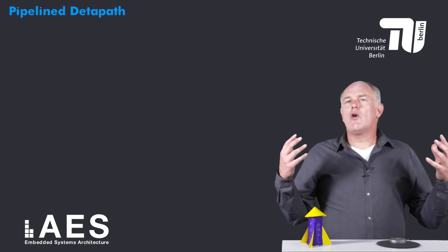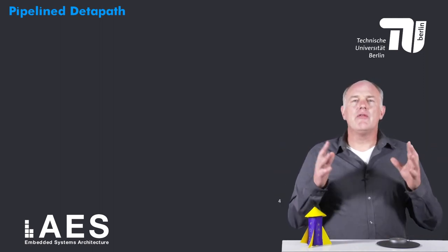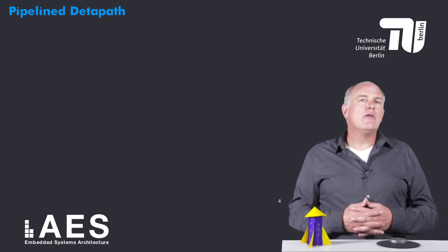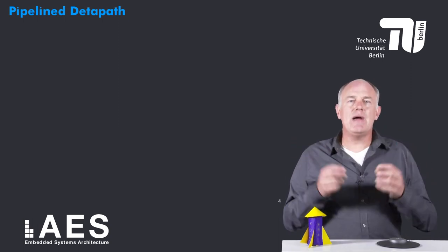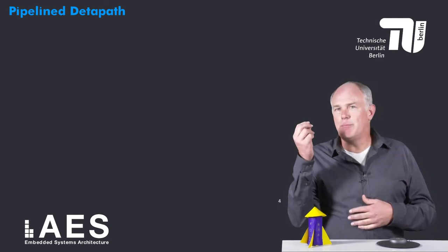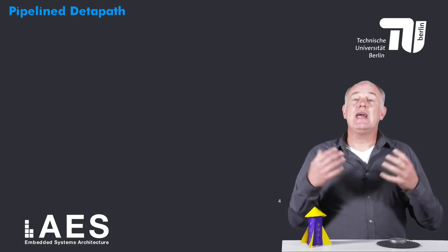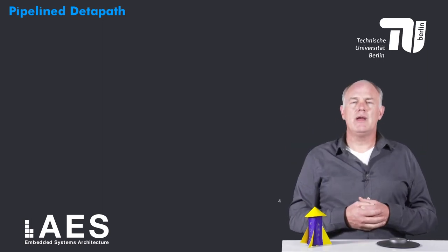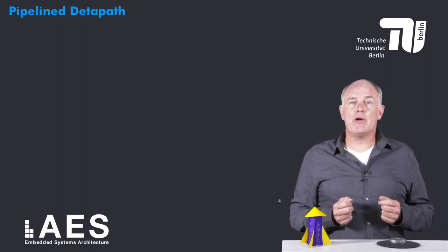I'm going to draw a block diagram of our first processor, the five-stage pipeline processor. Furthermore, I am going to focus on the data path of the processor. The data path is the part of the processor that performs operations. It is controlled or steered by the control part. Data path and control together form the processor.